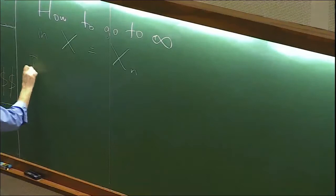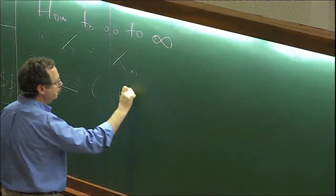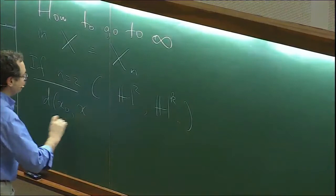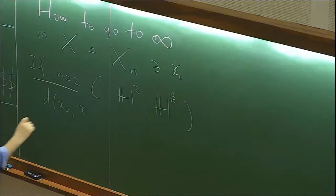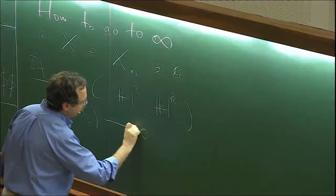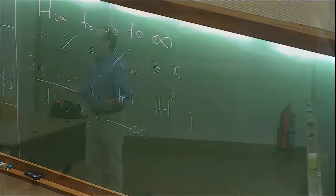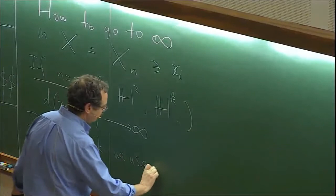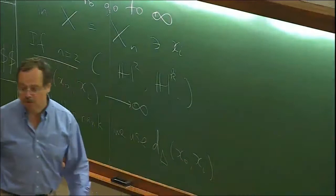For n equal to two, say in H2 or hyperbolic space Hk, we say the distance from base point x-naught to x_i diverges to infinity - that's what it means for a sequence to not stay bounded. In higher rank, we use the vector-valued distance d-delta from x-naught to x_i, because it captures more information about going to infinity. We know that this takes values in the Weyl chamber.